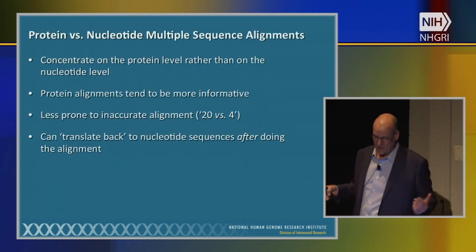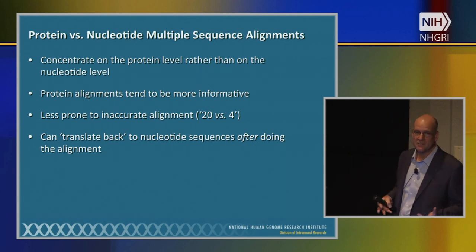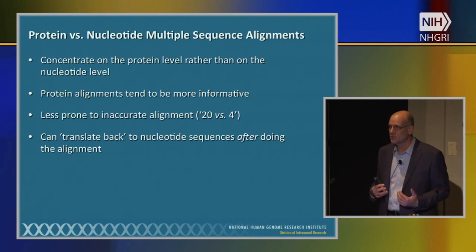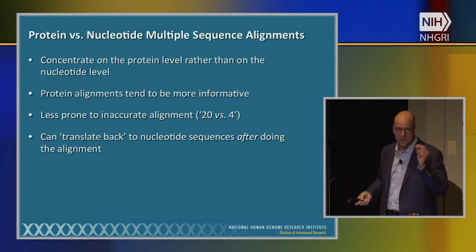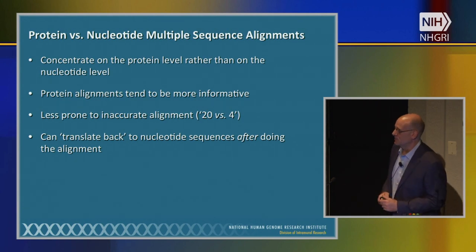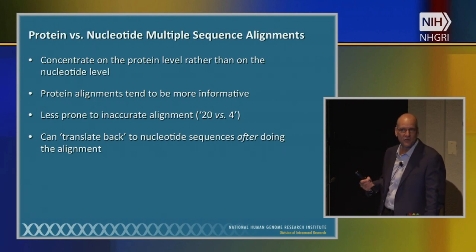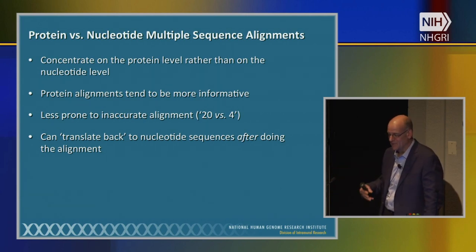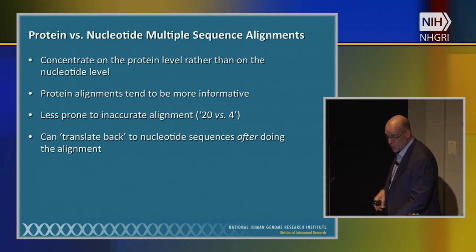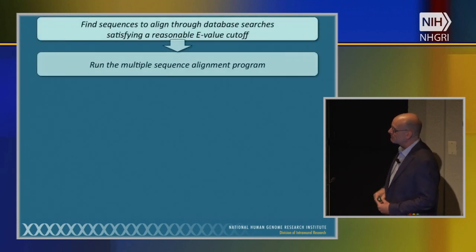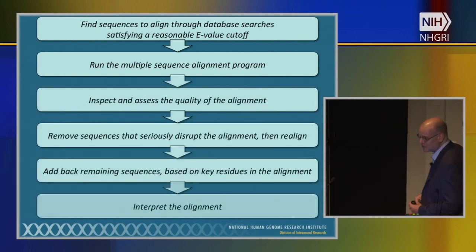Most of you have at some point tried to make a multiple sequence alignment. I want to offer some general guidelines to help you improve when you do this next. There's always the question of whether to align protein sequences or nucleotide sequences. I prefer the protein level because there's more information content in the constellation of 20 amino acids compared to four nucleotide bases that are all structurally similar. That said, if you're doing RNA-seq experiments or looking at regulatory elements, you obviously need the nucleotide level.